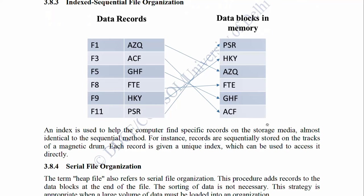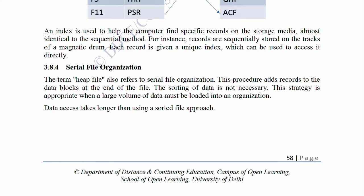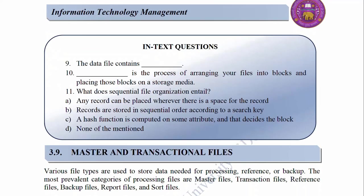3.8.4 Serial File Organization: The term heap file also refers to serial file organization. This procedure adds records to the data blocks at the end of the file. The sorting of data is not necessary. This strategy is appropriate when a large volume of data must be loaded into an organization. Data access takes longer than using a sorted file approach. In-text questions: 9 — The data file contains dash. 10 — Dash is the process of arranging your files into blocks and placing those blocks on a storage media. 11 — What does sequential file organization entail? A. Any record can be placed wherever there is space; B. Records are stored in sequential order according to a search key; C. A hash function is computed on some attribute that decides the block; D. None of the mentioned.